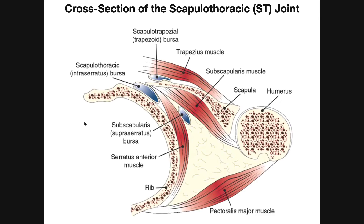Here's a cross section of the scapulothoracic joint. Here's one of the ribs, and over here we see the humerus with the intertubercular groove. The lateral lip is where the greater tubercle is superiorly; the medial lip is where the lesser tubercle would be. We can see pectoralis major here, originating from the sternocostal regions and inserting on the lateral lip of the intertubercular groove. The medial lip is the insertion of latissimus dorsi and teres major. Here's the subscapularis muscle going from the anterior surface of the scapula and inserting on the lesser tubercle. And here's the trapezius muscle, originating on the spinous processes up to the nuchal ligament and external occipital protuberance, inserting on the scapula along the medial border region.